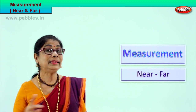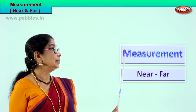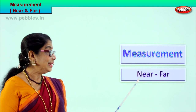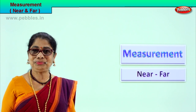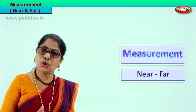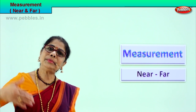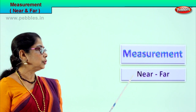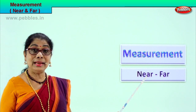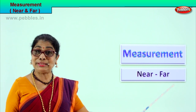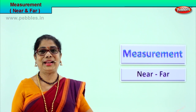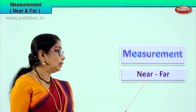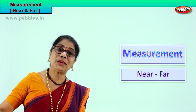Hi children, let us learn two other measurements. What are they? Near and far. Near is what is close by, what you can see, and something far away. Now we are going to learn these two measurements — near and far. We will look at pictures and try to understand what is near and what is far away.